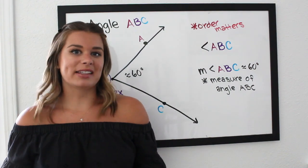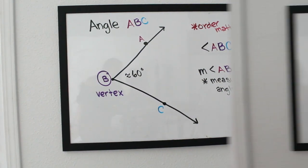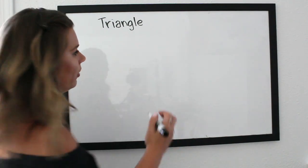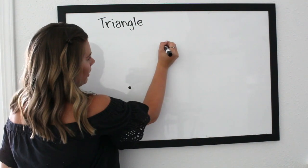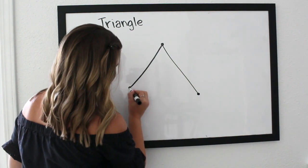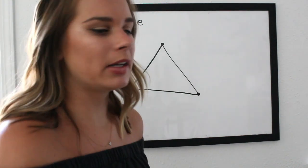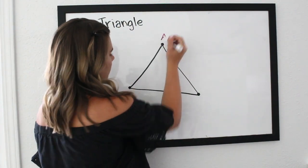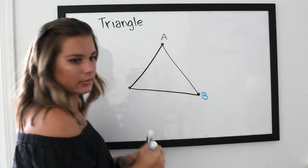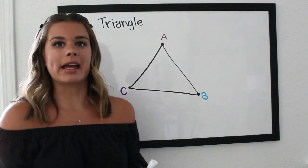Now we'll move on to the last notation: a triangle. Let me draw a triangle using three points and label them A, B, and C. This triangle's name is triangle ABC.